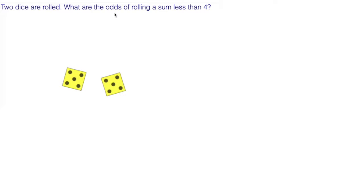Two dice are rolled. What are the odds of rolling a sum less than four? Odds are the number of ways that you can win out of the number of ways that you can lose.